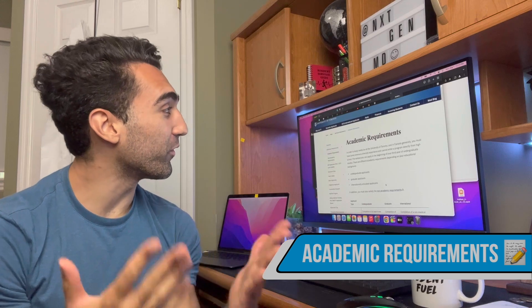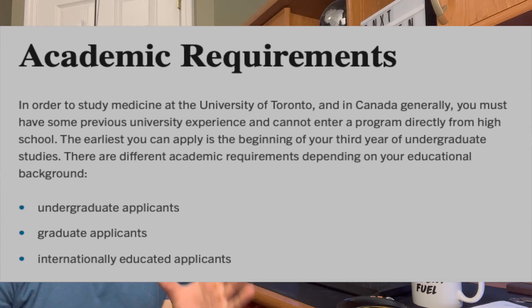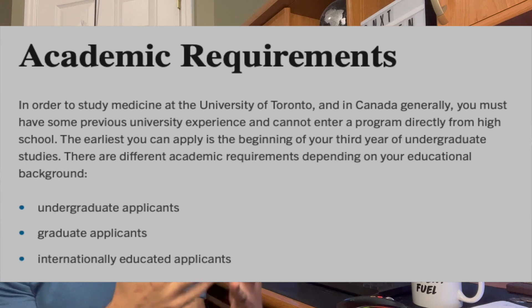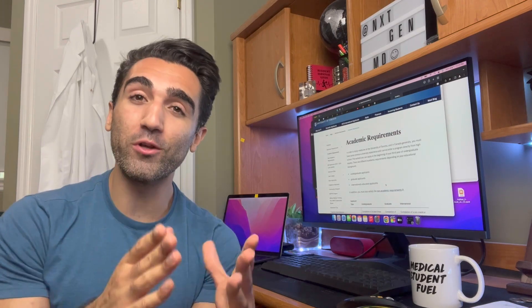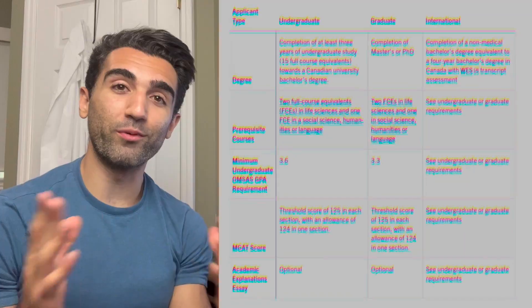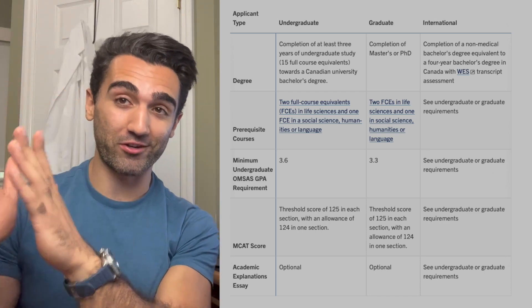Starting with the academic requirements: first, you have to have at least some previous university experience. The earliest you can apply is the beginning of your third year. In Ontario there are two different types of undergrad degrees — some three-year bachelor's degrees and some four-year honors degrees. If you're in a four-year honors degree, you can apply at the beginning of your third year. U of T splits academic requirements into three categories: undergraduate, graduate, and international student.